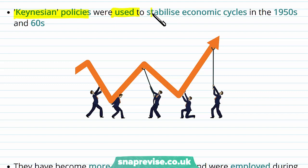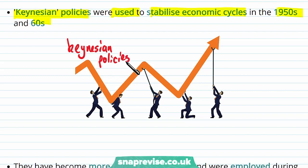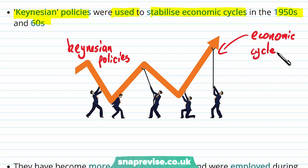Keynesian policies were used to stabilize economic cycles during the 50s and 60s, and it was those policies that led to recovery in that period. They used the economic cycle to understand where they were and how much intervention was needed. However, in the 70s and 80s, we saw a change in approach to stabilizing an economy, as governments started preferring to use monetary policy for influencing the economy. Keynesian policies have since fallen out of favor to a certain degree, and currently a lot of government policy used to stabilize the economic cycle has been monetary policy focused.